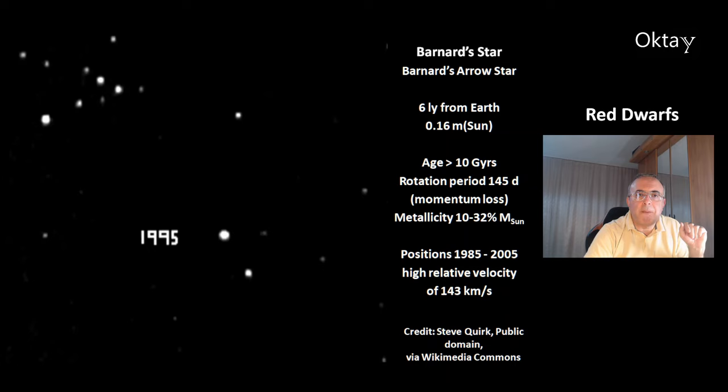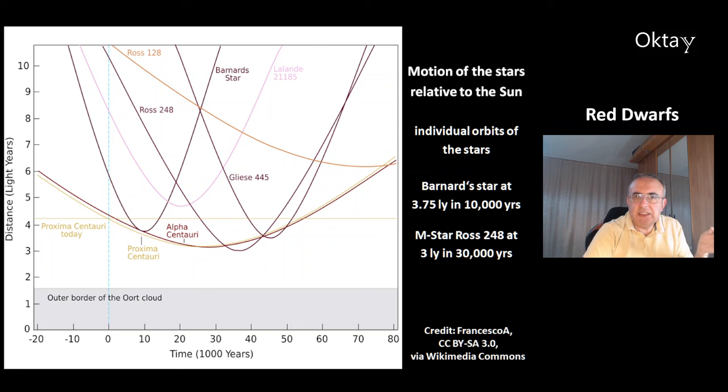This shows the motion of nearby stars relative to the sun over time, with individual orbital paths visible. Today, Proxima Centauri and Alpha Centauri are the closest stars. In about 10,000 years, Barnard's Star will approach the sun to 3.75 light years. In 30,000 years, another M-star, Ross 248, will approach to about 3 light years. Eventually, all these stars will drift away and others will approach the sun.